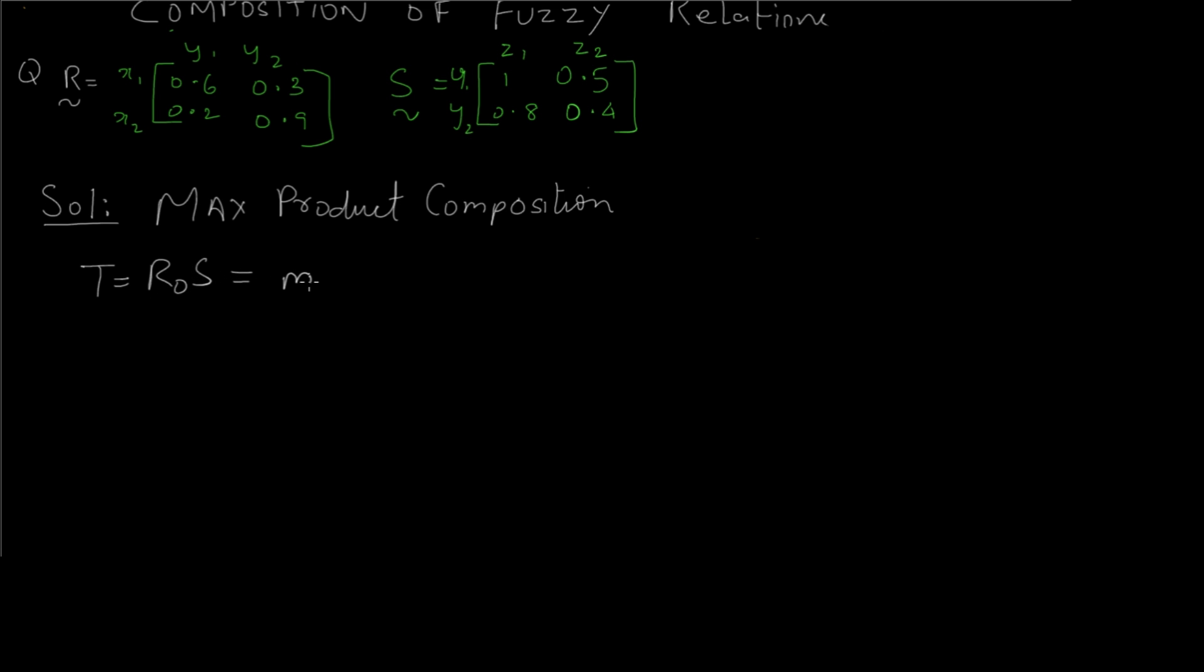It is given by max of the first element multiplied by the first element of this set. For the first element, we have to take the first row of the first relation and first column of the second relation and multiply these two values.